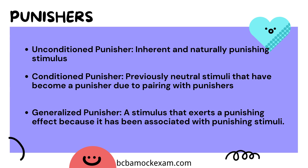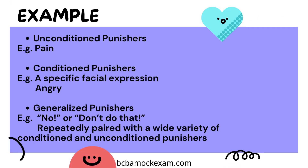A conditioned punisher, on the other hand, involves previously neutral stimuli that have acquired the ability to punish due to their association with actual punishers. For instance, if a person repeatedly hears the word 'angry' while experiencing a punishing situation, the word itself can become a conditioned punisher that elicits a negative response.